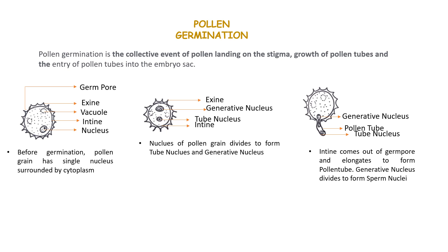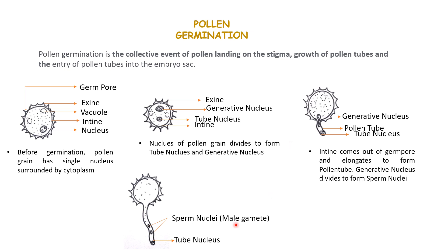This pollen tube grows through the stigma and into the style, and as it keeps growing it dissolves the tissue with the help of some enzymes which it produces. Finally it reaches the ovary, where it enters the ovule through a minute pore on the ovule known as the micropyle. In the meanwhile, the nucleus present inside the pollen grain divides and forms two nuclei — one is known as the tube nucleus and the other is known as the generative nucleus. The generative nucleus then divides into two sperm nuclei or male gametes. Thus, the two sperm nuclei and the tube nucleus are carried along as the pollen tube enters into the ovary.